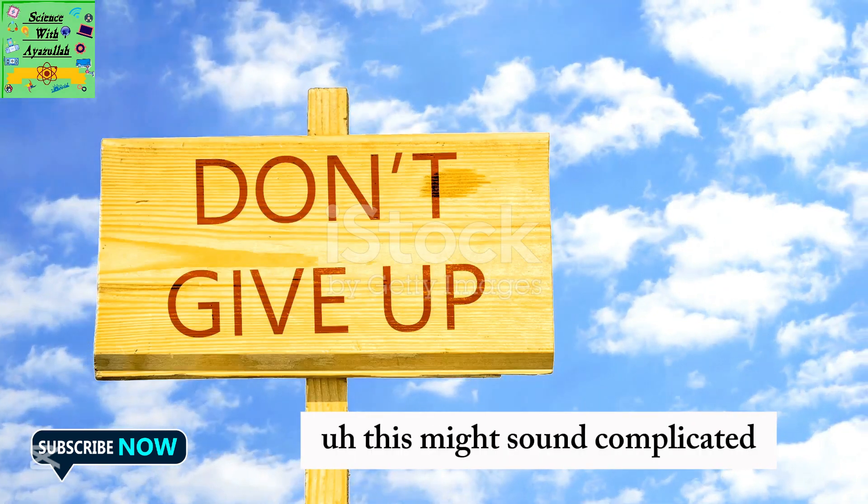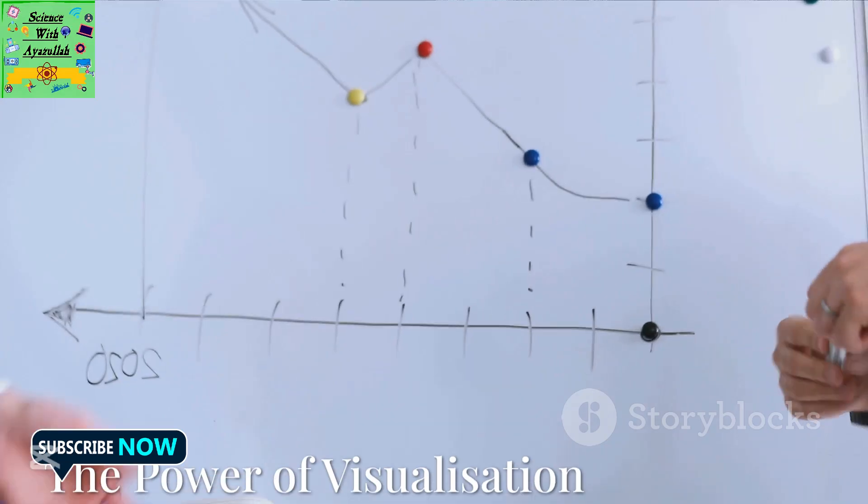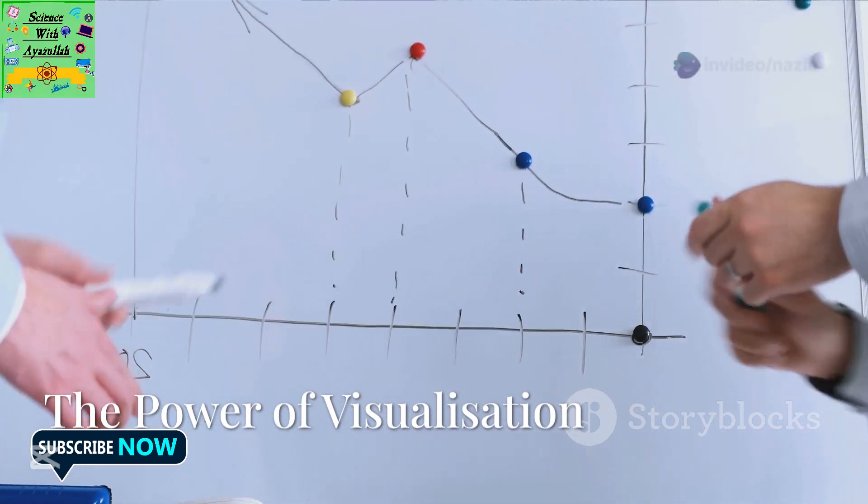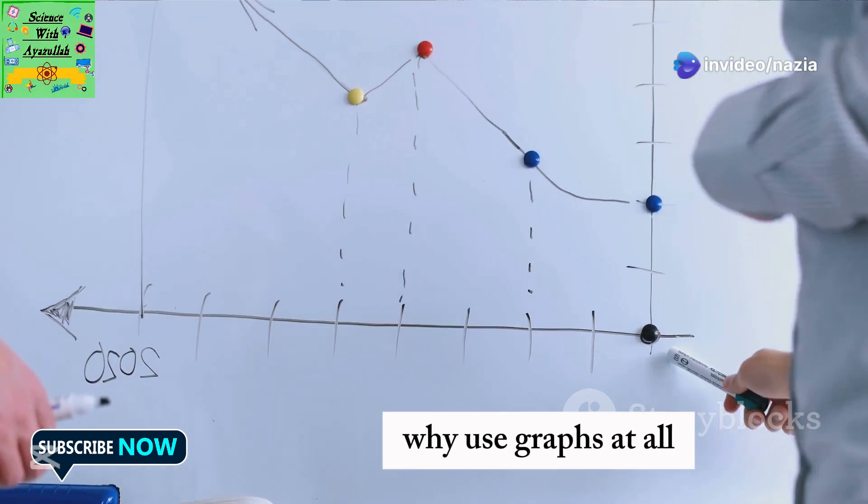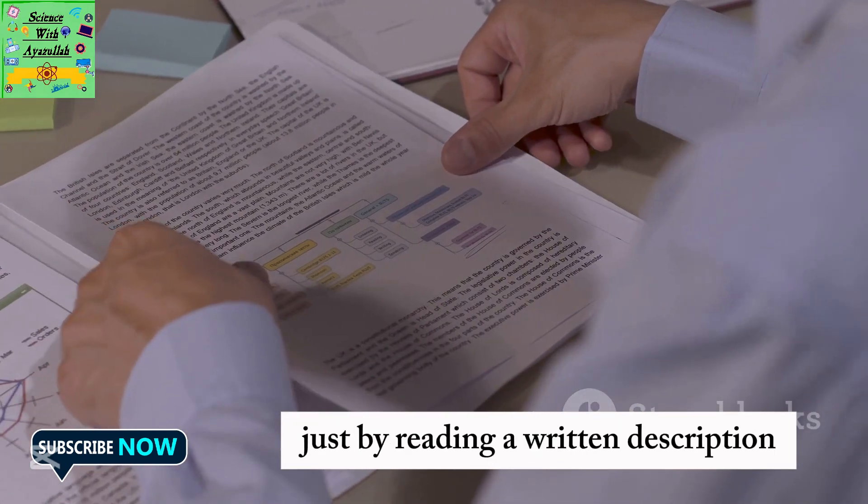This might sound complicated, but stick with me. It's like a road map of an object's movement. Now, you might ask why use graphs at all? Why not just write down the details? Well, imagine trying to understand a complex dance routine just by reading a written description.